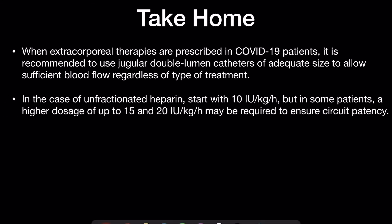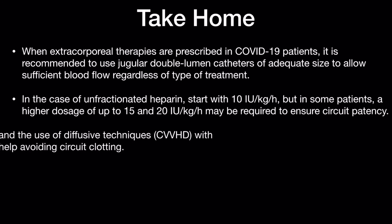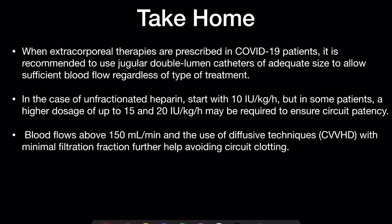For unfractionated heparin, start with 10 international units per kg per hour, but in some patients you may need to go up to 15 to 20 units per kg per hour to ensure circuit patency. Blood flows should be above 150, and use of diffusive therapy with minimal filtration fraction helps avoid circuit clotting — do not attempt flows less than 150.